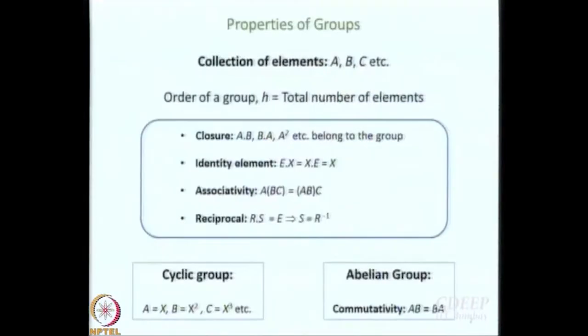Let us introduce ourselves to what are called classes. A set of elements is called a group if and only if they satisfy these 4 properties: closure, presence of identity element, associativity, and reciprocity. Commutativity is not an essential criterion. If commutativity holds then we call it an abelian group. Cyclic groups are always abelian groups.